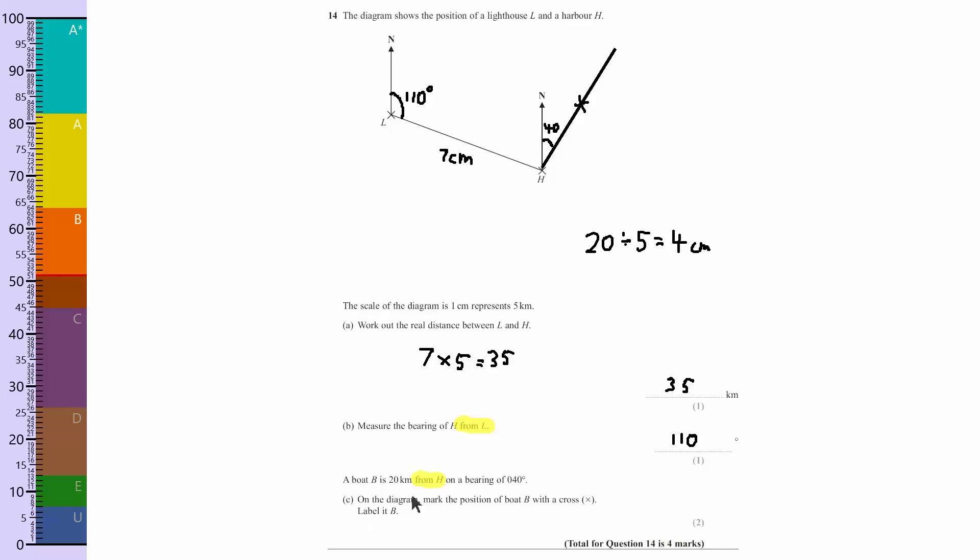Now it says mark the position of boat B with a cross and label it B. So I need to do a little B next to there. So I've done the cross and I've done a little B. That's how you'd answer in an exam: you draw a thin line up to mark out 40 degrees from the north line, as bearings are always clockwise from north, and then you do a little X which is four centimeters away from H.